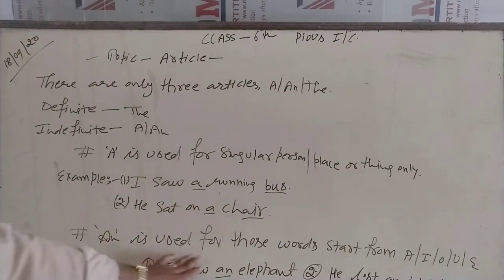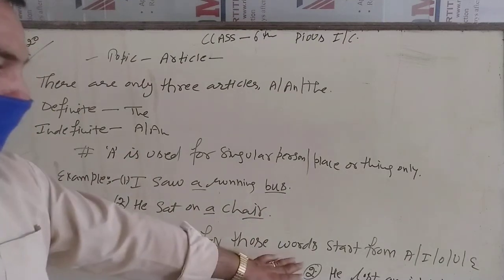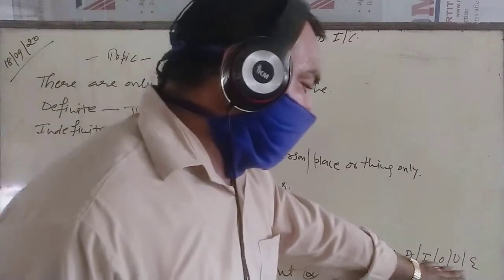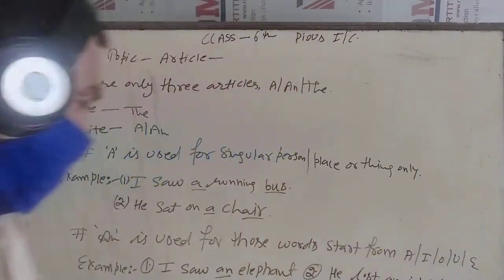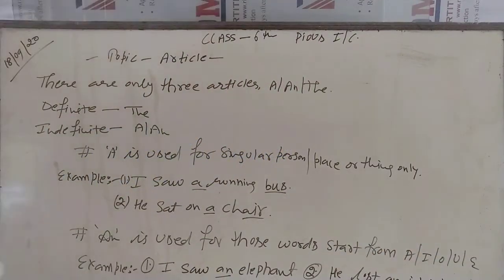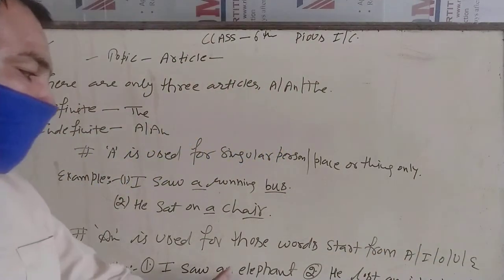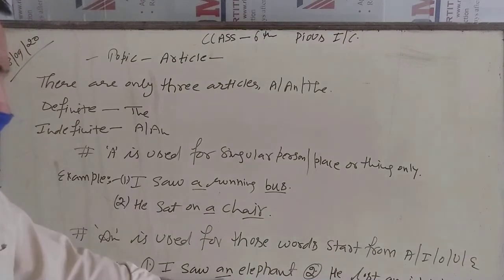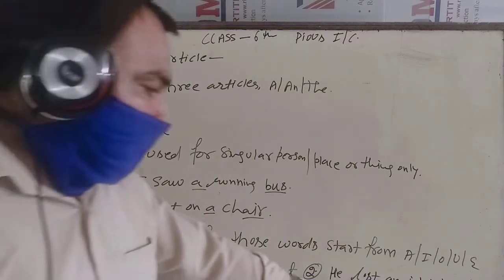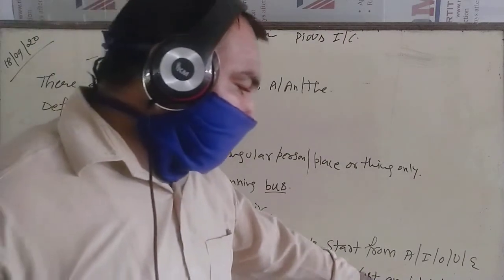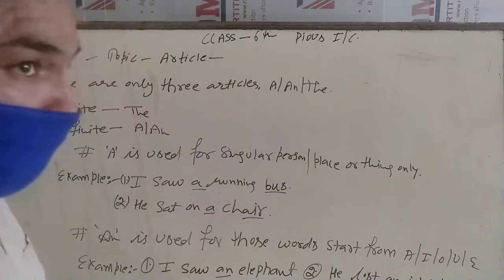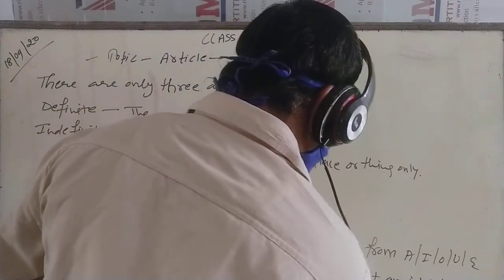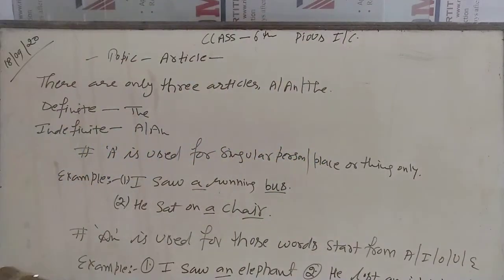An is used for those words that start from A, I, O, U, E. Example: I saw an elephant. Yani ki Elephant E se start tha to An laga diya. He lost an ink pod. Ab ink pod I se shuru tha to An laga diya.